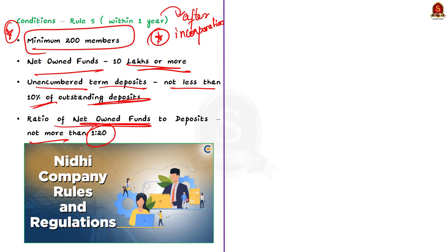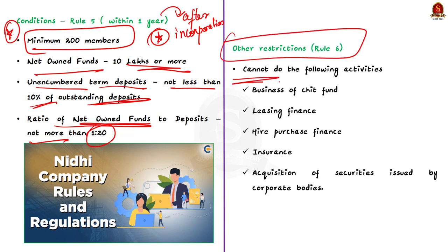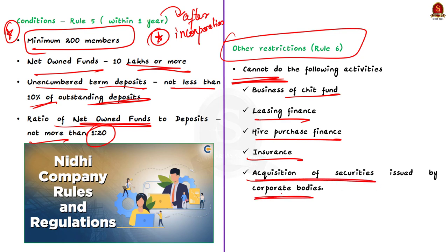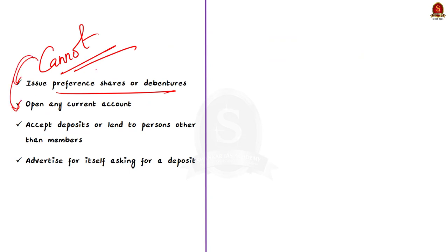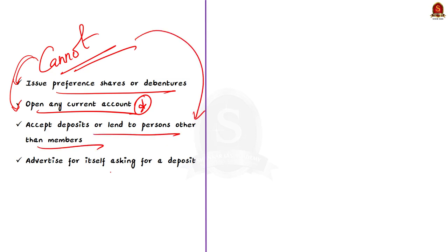Other restrictions as per Rule 6: it cannot carry on the businesses of chit fund, leasing finance, hire purchase finance, insurance, or acquisition of securities issued by corporate bodies. It cannot issue preference shares, debentures or any other debt instruments. It cannot open any current account with its members — please make a note of this important point. It cannot accept deposits or lend to any person other than its members. Finally, it cannot advertise asking for a deposit.